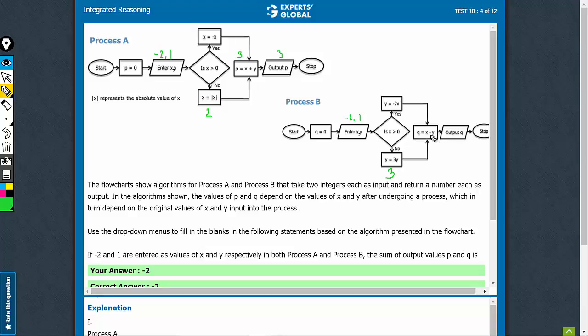q is equal to x minus y. So, minus 2 minus 3. q becomes minus 5. Output q is minus 5.